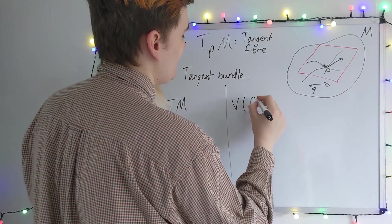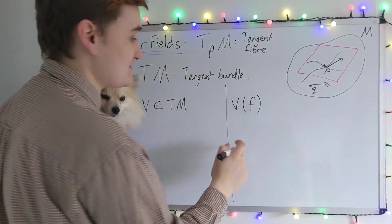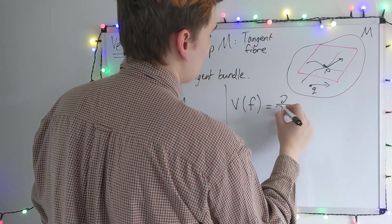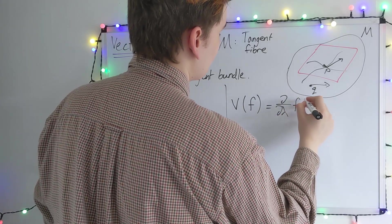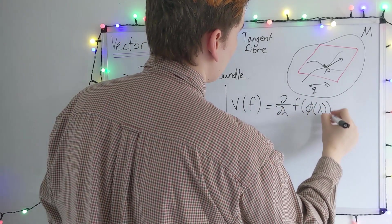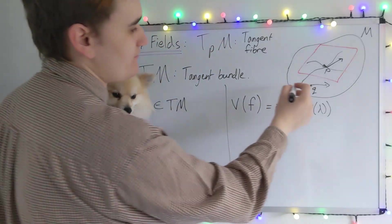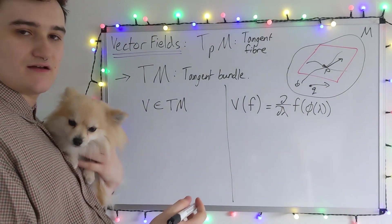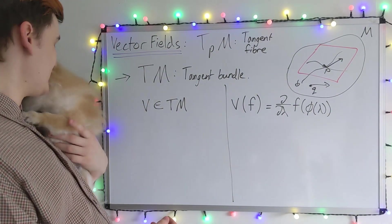We say that the vector, and remember we have to act on something, so it's acting on a function, was given by this velocity of the function when it acts on the curve. We have these things which we call integral curves, which essentially just define the direction that the vector is pointing in.